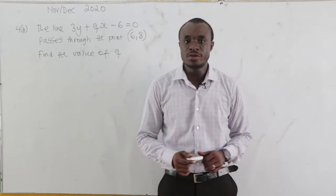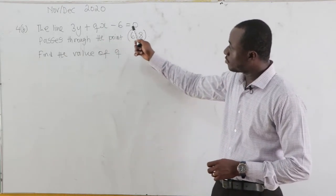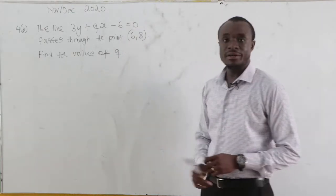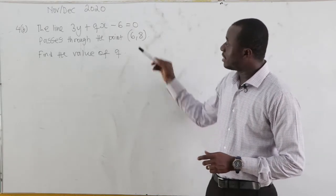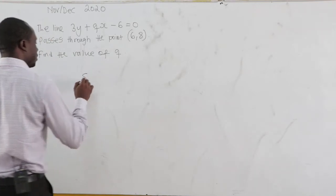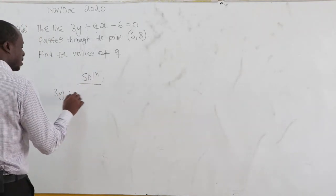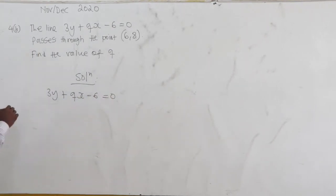Novdeq 2020, question 6. The line 3y plus qx minus 6 equal 0 passes through the point (6,8). Find the value of q. Now because the line passes through this point, it means that this point satisfies the equation of the line. So we have our equation to be 3y plus qx minus 6 equal to 0.